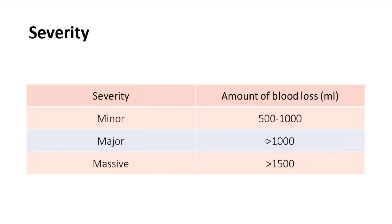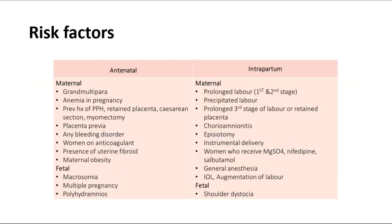The severity of the hemorrhage can be divided into minor, major, and massive, with the amount of blood loss shown on screen. These are some of the risk factors for postpartum hemorrhage — there are antenatal risk factors and intrapartum risk factors, which are further divided into maternal and fetal risk factors.